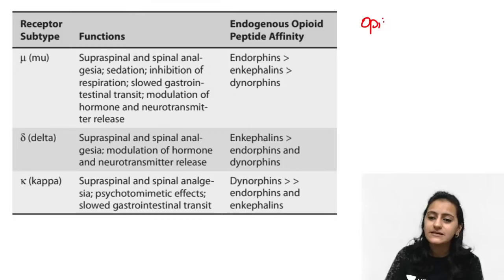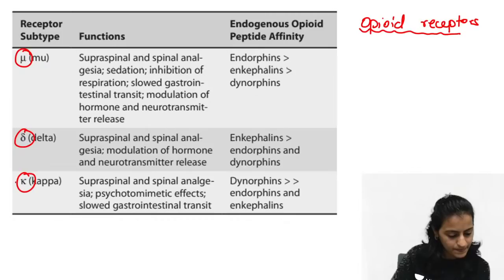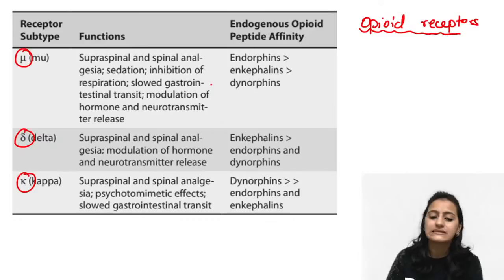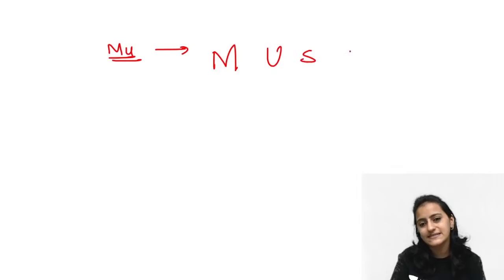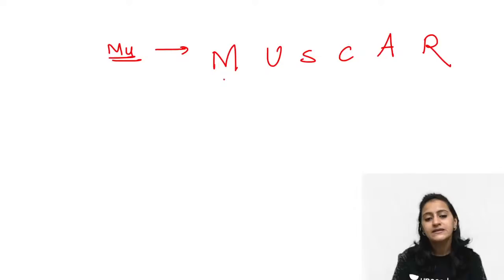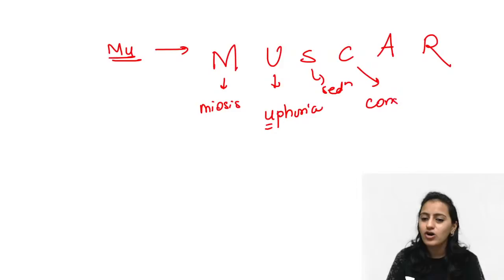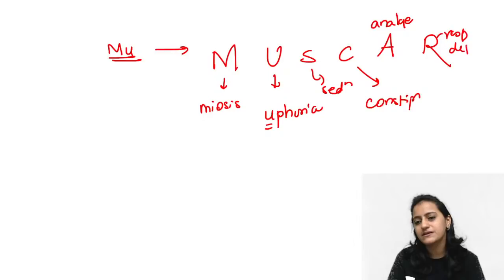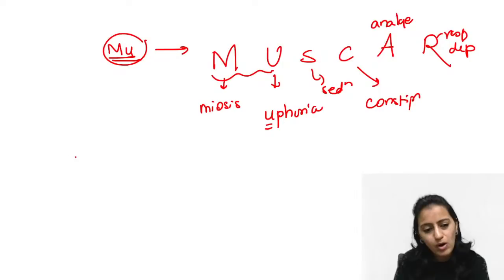Coming to opioid receptors: the most important question is what effects are mediated by mu, kappa, and delta receptors. For mu receptors, remember the mnemonic MUSCAR — like muscarinic: Meiosis (pupil constriction), Euphoria, Sedation, Constipation, Analgesia, and Respiratory depression. All these effects are mediated by mu receptors.